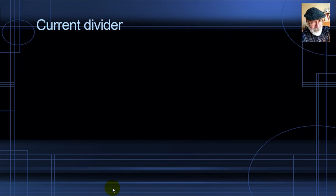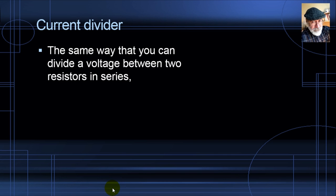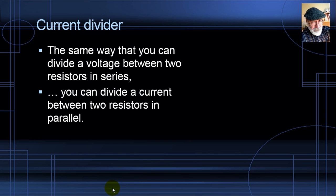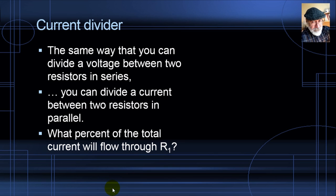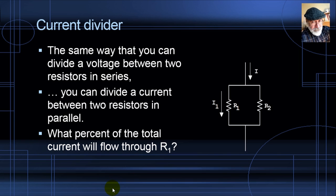Now let's work with the mirror of the voltage divider: the current divider. Just as you can divide a voltage between two resistors in series, you can divide a current between two resistors in parallel. The question is: what percent of the total current flows through R1?